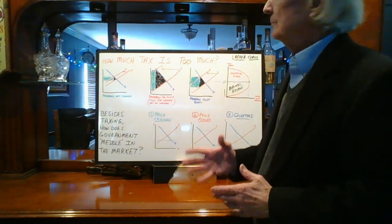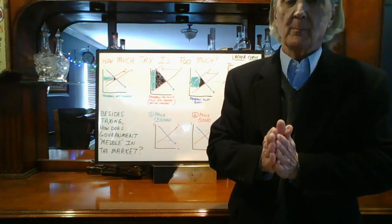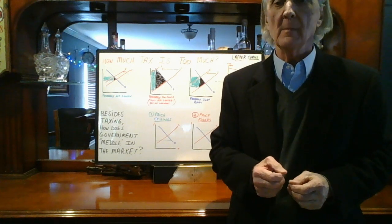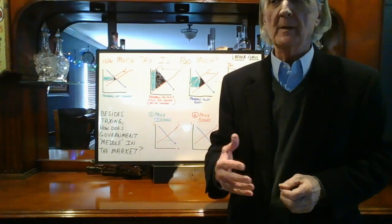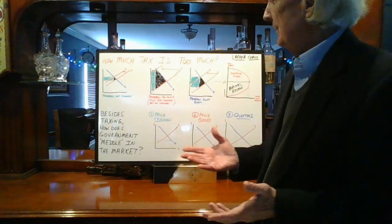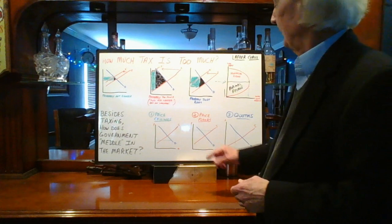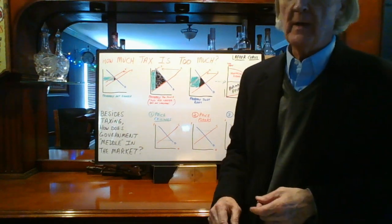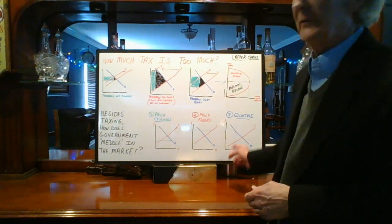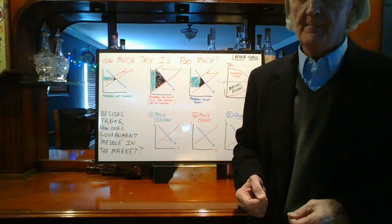We should probably include taxing as government intervention into the market. But when we think of government meddling with the market, typically we think of the big three: price ceilings, price floors, and quotas. These two are price controls; this is our quantity control.